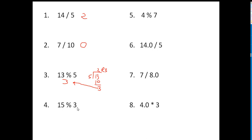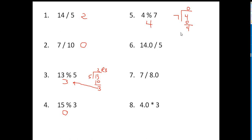Number 4: 15 modulus 3. Well, 15 divided by 3 is 5 with none left over, so 15 modulus 3 is 0. Number 5: 4 modulus 7. You take 4 divided by 7, and 7 goes into 4 zero times, so 0 times 7 is 0, and you're left with 4, so 4 is the remainder and that's your answer.